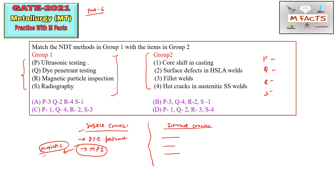The first technique is ultrasonic testing, second is dye penetrant testing, then magnetic particle inspection, and radiography. Dye penetrant is for surface defects and magnetic particle inspection is also for surface defects. Here they mentioned surface defects in HSLA steels — high strength low alloy steels, which are magnetic. So R you can match by 2. Radiography is mostly used for castings, and core shift in casting is detected by radiography, so S you can match by 1.